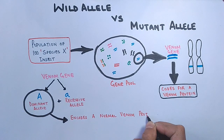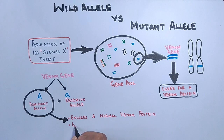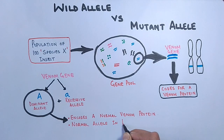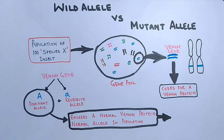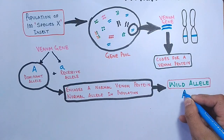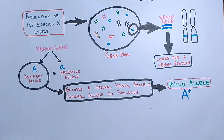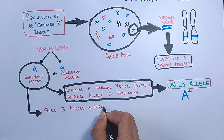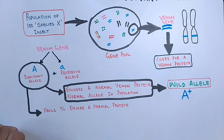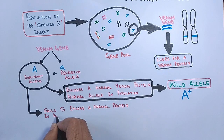The 'A' allele, the venom allele, when it expresses itself, encodes for a normal venom protein — meaning it is the normal allele in the population. We call this allele the wild allele, denoted by 'A' with a plus sign as the superscript (A⁺). But sometimes this 'A' allele fails to encode a normal protein within the population due to some mutations.